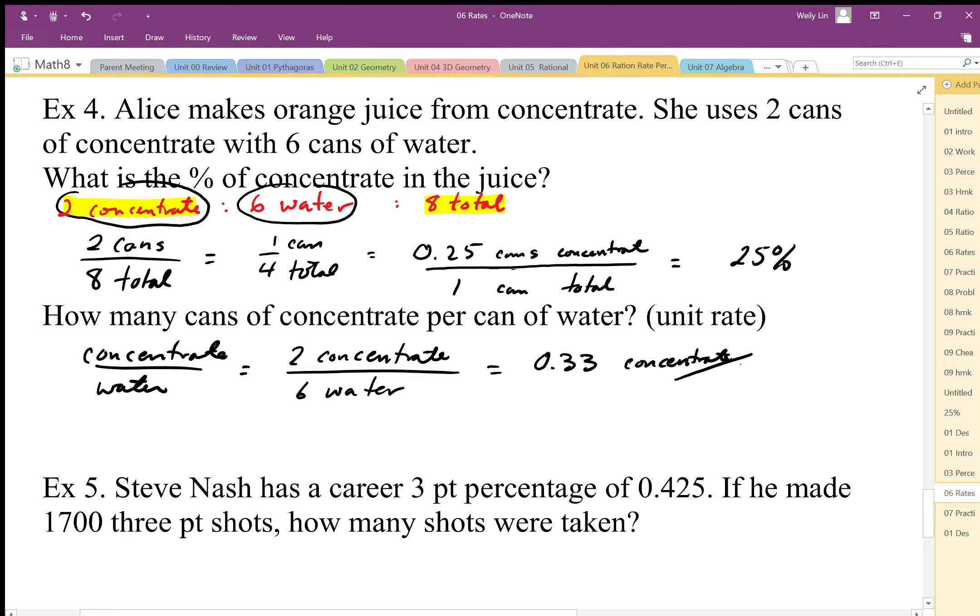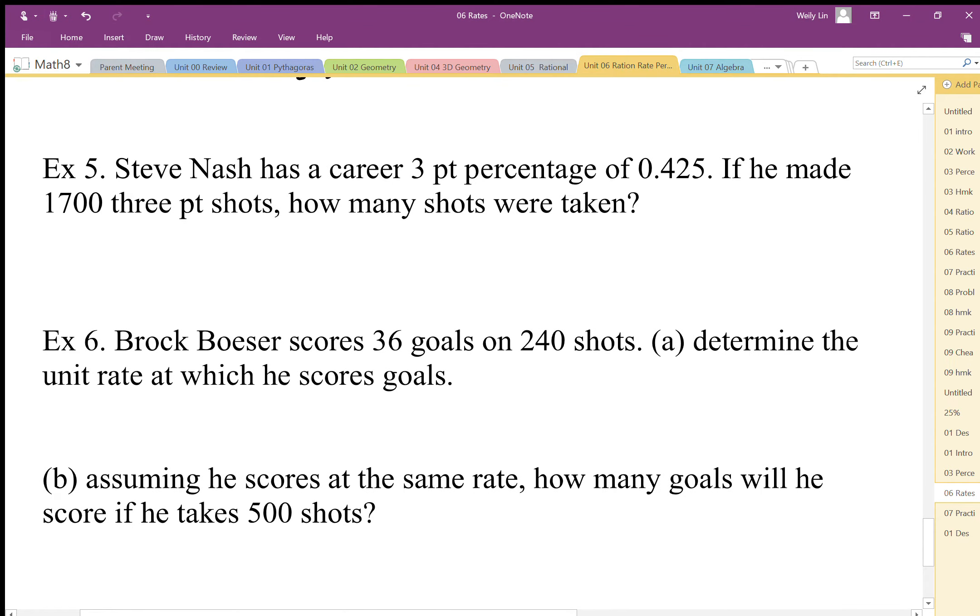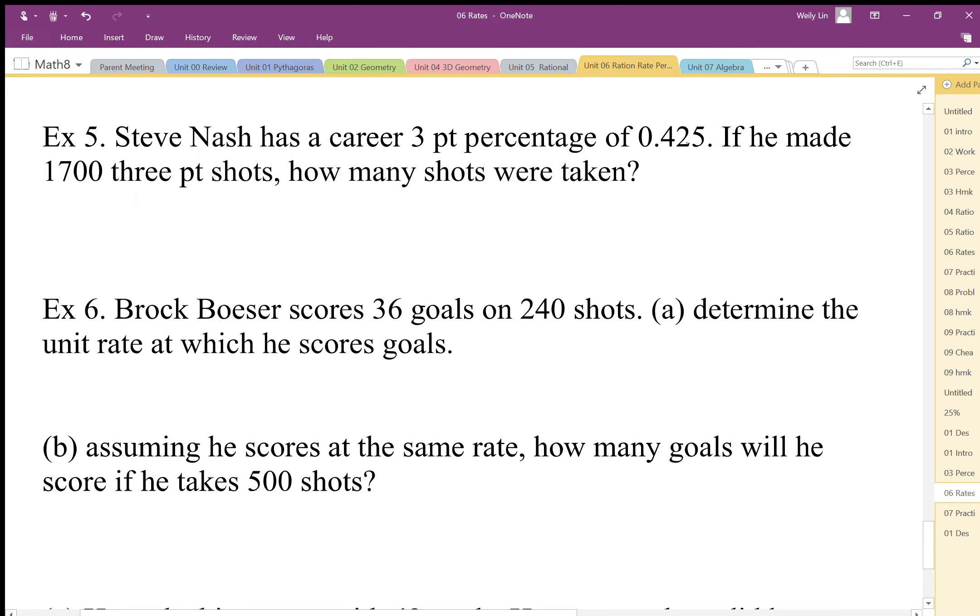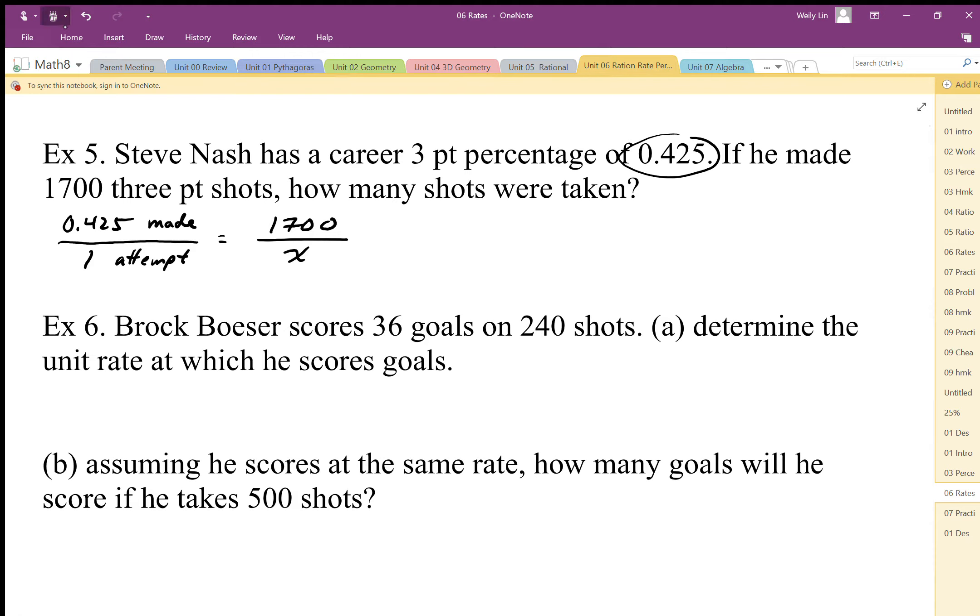Steve Nash has a career three-point percentage of 0.425. A three-point percentage represents 0.425 made for one attempt, so this is how many he makes per attempt. This is a unit rate. If he made 1,700 three-point shots, that's the part that's made. We want to know how many attempts, so x is attempts. This is a unit rate, so that represents my multiplier.